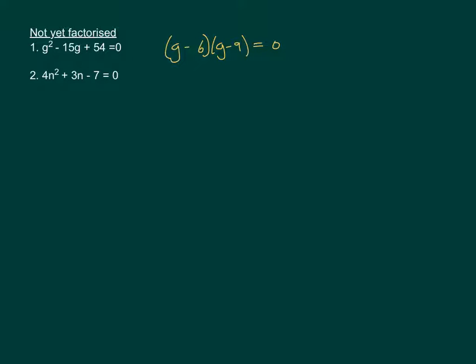And we're going to say that that equals 0. And then from there, it's exactly the same as before. So g minus 6 equals 0 or g minus 9 equals 0, because one of those brackets has to equal 0 for there to be an answer of 0. So g equals 6 or g equals 9.